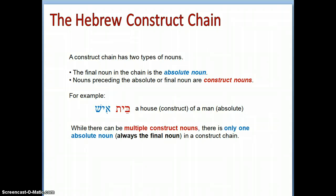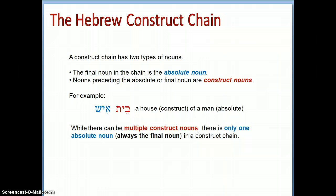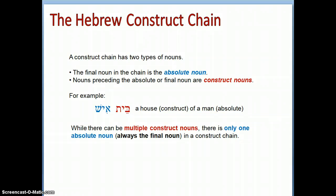The absolute noun is always the final noun in a construct chain. So, if we wanted to say 'a table of a room of a house of a man,' 'man' would still be the absolute noun, and all the other nouns would be construct nouns.